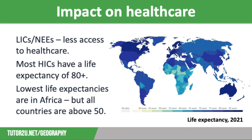What about the impact on healthcare? In LICs and NEEs, there is less access to adequate healthcare, particularly in rural areas. Access to education affects the number of qualified doctors and nurses, meaning that the number of patients per doctor is very high, so it's harder to make appointments. In addition, a lack of investment means it is difficult to fund hospitals and clinics, along with vaccination programs and education initiatives that highlight the importance of family planning and hygiene. Also, in many LICs and NEEs, people have to pay for healthcare appointments and medication, which is unaffordable for many.